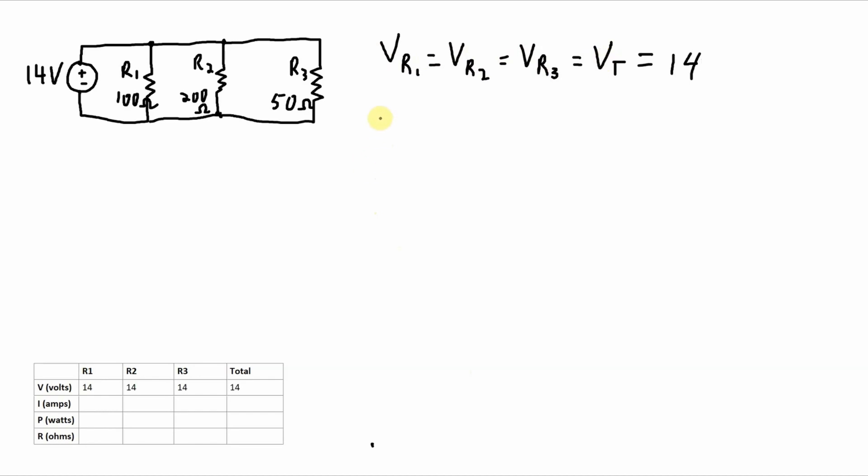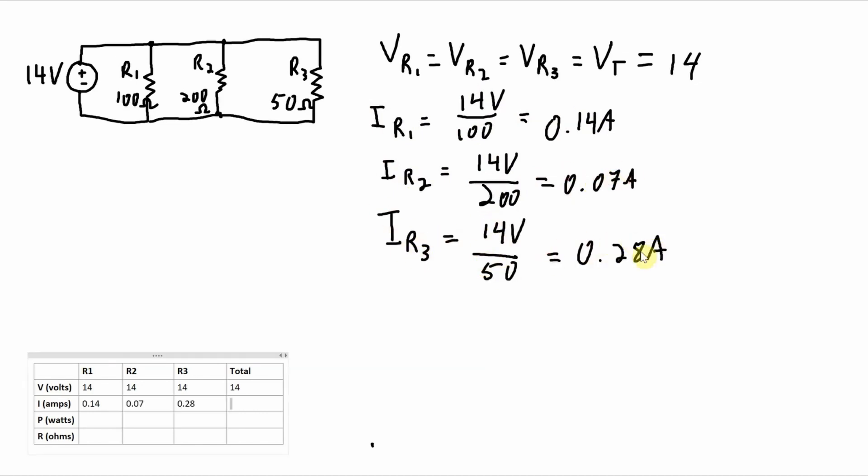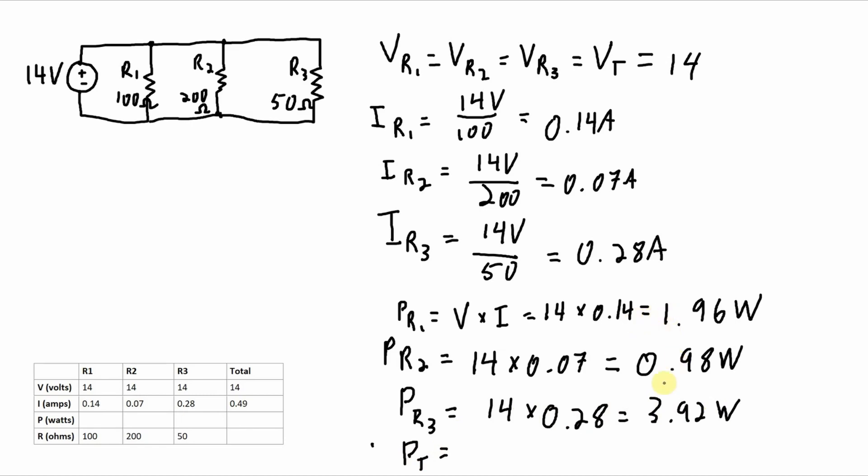The current through each one is going to be an individual thing, but the calculations are going to be exactly the same. Current through R1 is that 14 volts divided by the value of R1, and it's the same thing for R2 and R3. And the total current will simply be the sum of those three currents. And the powers can also all be calculated. I'm going to use V times I for this.